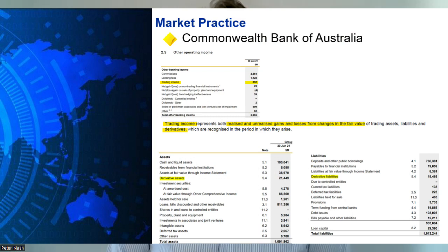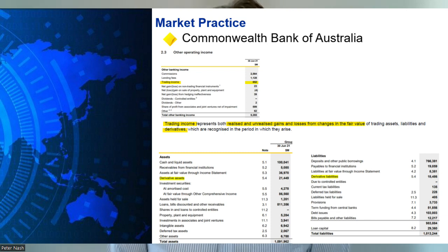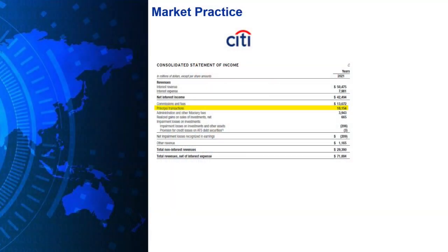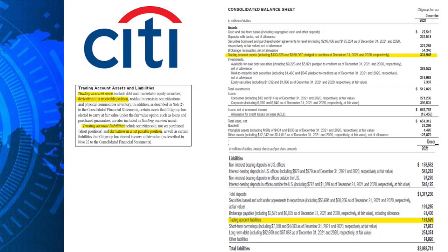In the market, different companies present their financial statements with different line items. Looking at the Commonwealth Bank of Australia — Australia's biggest bank — in their income statement they report gains and losses from derivatives trading in the trading income line, and on their balance sheet they report derivative assets and derivative liabilities. Over at Citi, they report derivatives gains and losses in a line item called principal transactions in the income statement, and on the balance sheet they use trading account assets and trading account liabilities — a different presentation to the previous example.